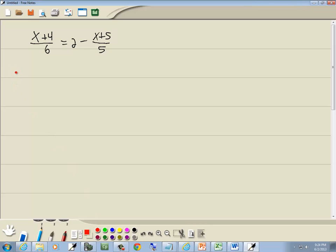Our first step is to get rid of parentheses, don't have any. Second step is to get rid of fractions. We do have fractions, and you get rid of them by multiplying everything by the LCM of all your denominators. I've got 6 and 5, so my LCM is going to be 30.